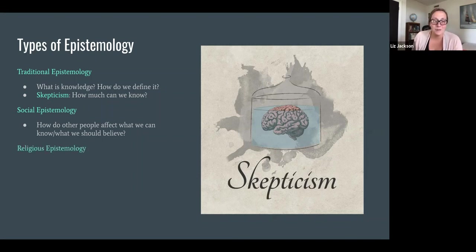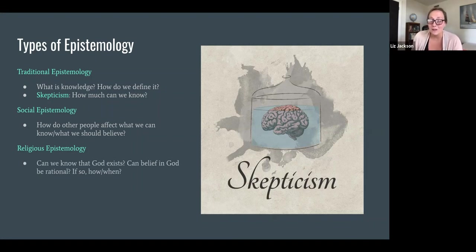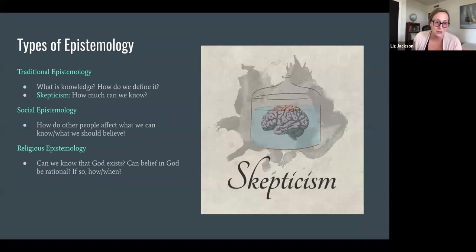The third category is what's known as religious epistemology. Religious epistemology involves questions like: could we ever know that God exists? Could believing in God be rational, and if so, how could it be rational or when could it be rational?